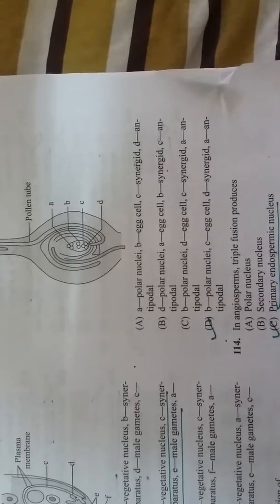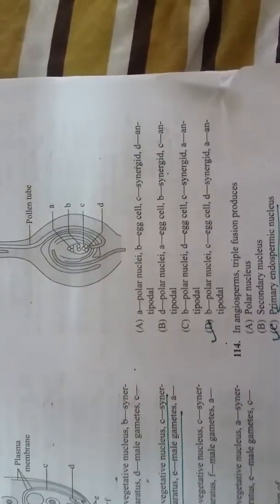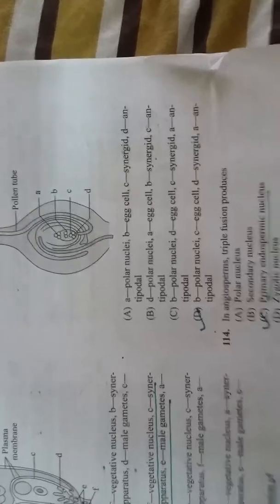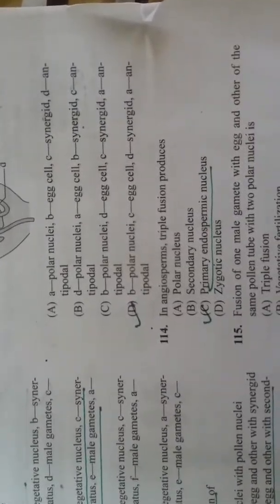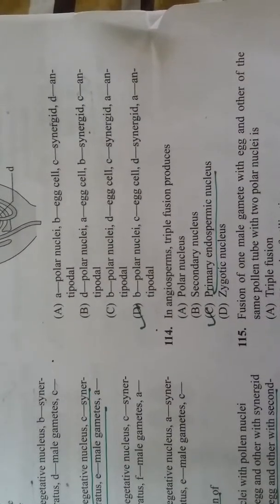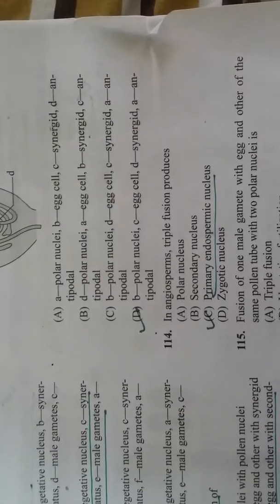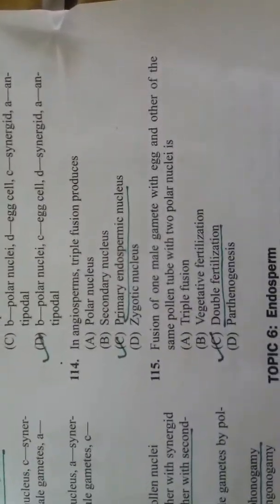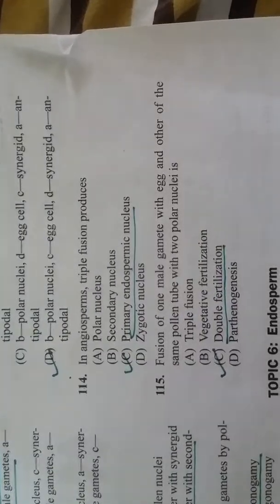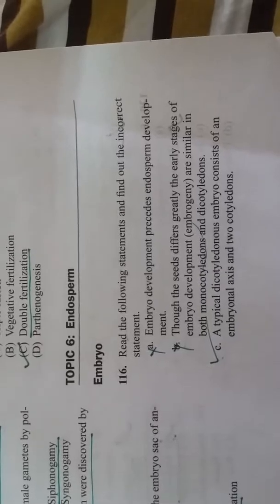111: In angiosperms, triple fusion produces primary endosperm nucleus. Fusion of one male gamete with egg, another from the same pollen tube with two polar nuclei is double fertilization. Read the following statement and find out the incorrect statement.